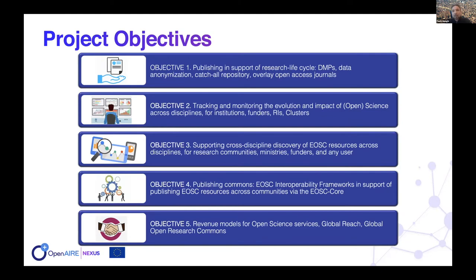Objective two is about tracking and monitoring the evolution of science. On one hand, we want to track — keep track of everything that is an event: publishing, citations, interlinking, processing, usage. On the other hand, you need to monitor — to come up with indicators that result from all these basic facts. These two activities require definitional standards, common agreements, and the ability to handle large amounts of data for institutions, funders, and so on.